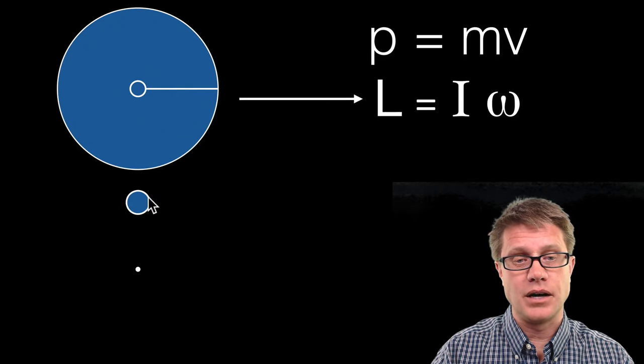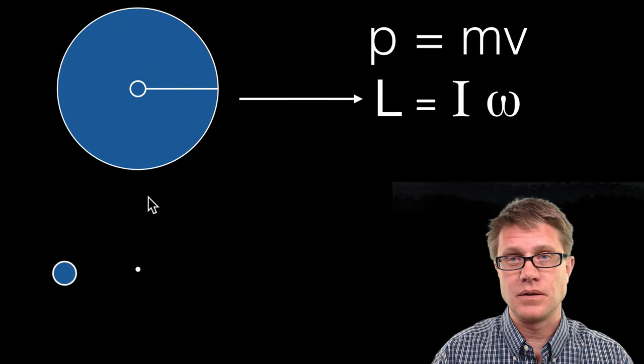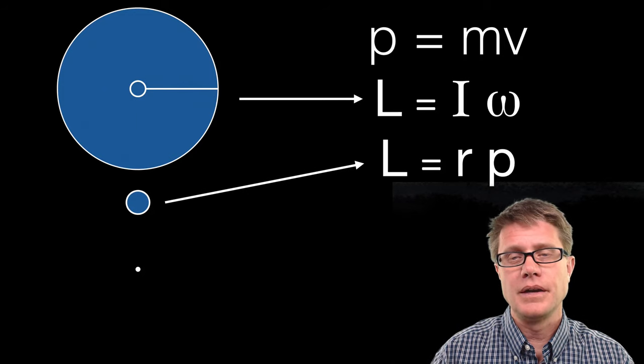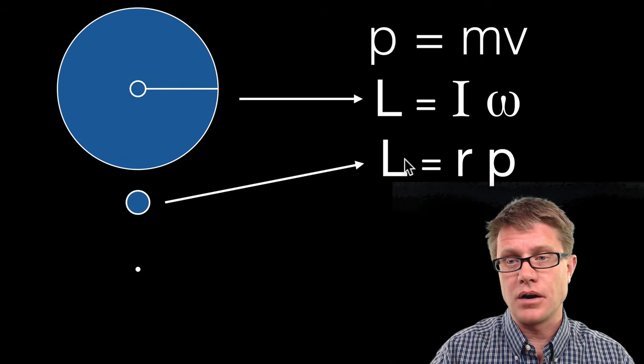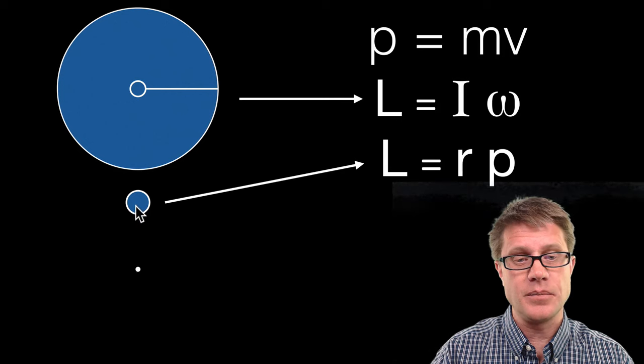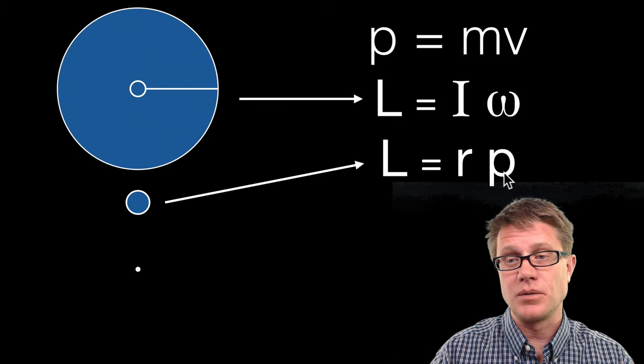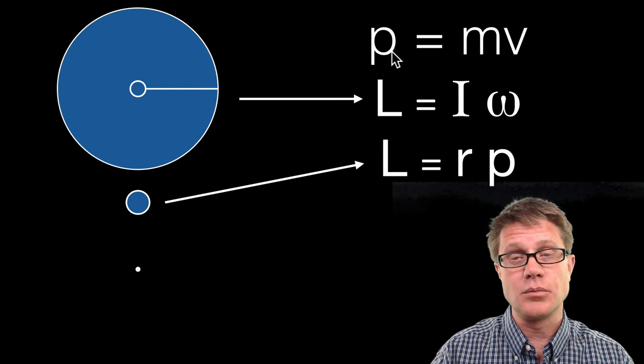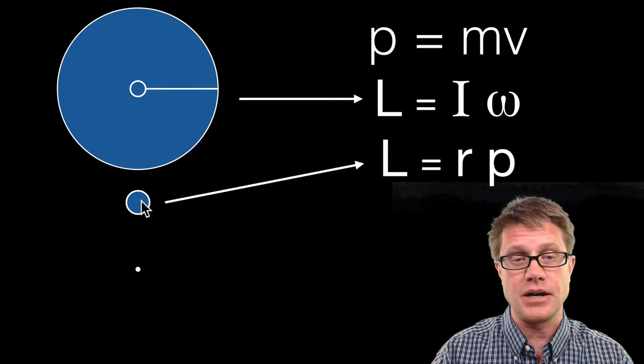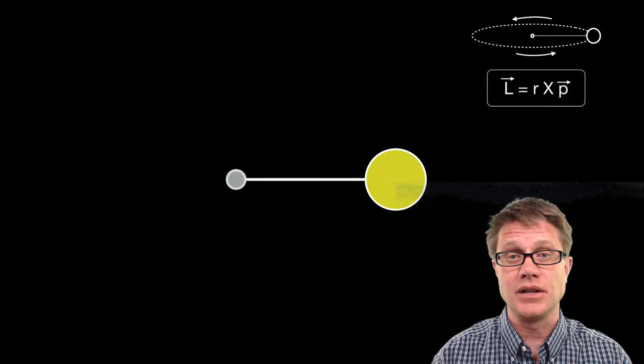Let us say we have a point object like this in rotation. Then we are going to use a different equation. Now L equals RP where R equals the radius, the distance from the center. And then this is going to be the linear momentum. It is the linear momentum we were talking about just a second ago. So that is going to be a product of the mass times the velocity.